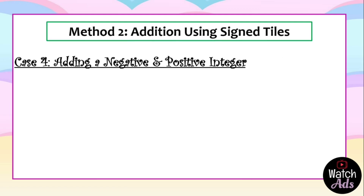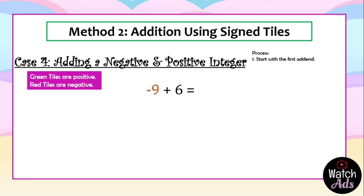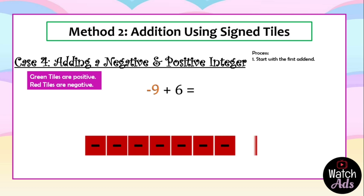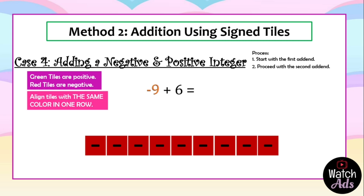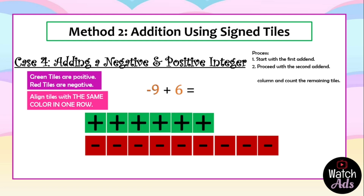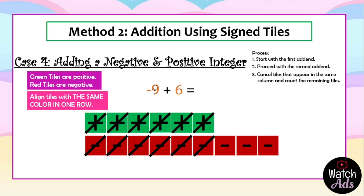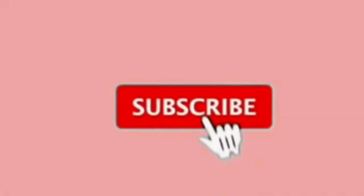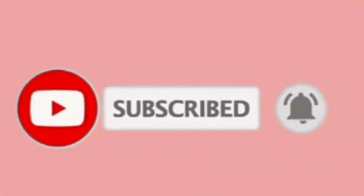For our fourth case, we add a negative and positive integer: negative nine plus six. We start with the first addend, negative nine — it is negative so we use nine red tiles. Then for the second addend, six, which is positive, we add six green tiles. We cancel the tiles that make pairs. We are left with three red tiles. Red tiles are negative, so the answer is negative three.